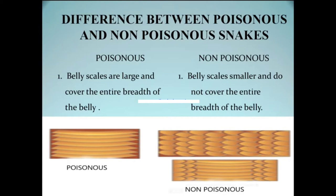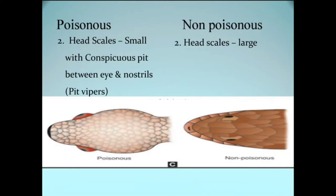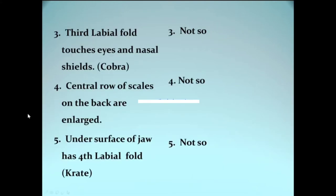Poisonous snakes have belly scales that are large and cover the entire breadth of the belly, whereas non-poisonous snakes have belly scales that are smaller and do not cover the entire breadth. Poisonous snakes have small head scales, whereas head scales in non-poisonous snakes are larger. You may find a pit between the nostrils and the eyelid in some poisonous snake species, especially the Pit Vipers, which is absent in non-poisonous snakes.